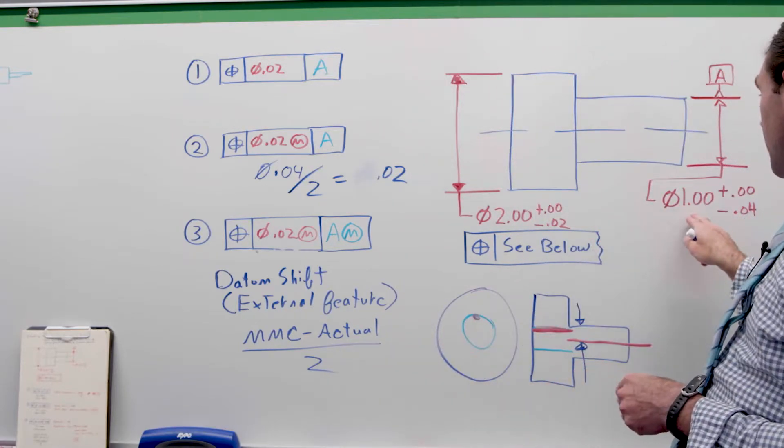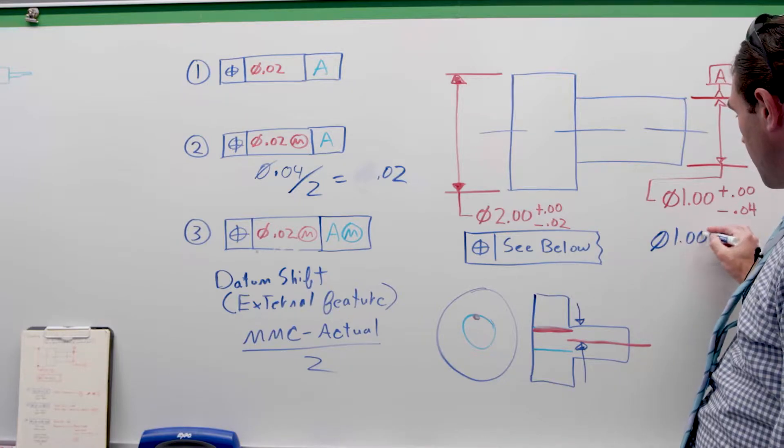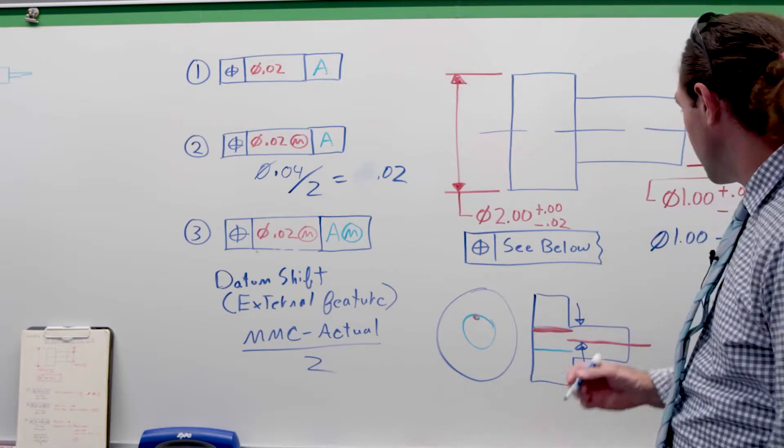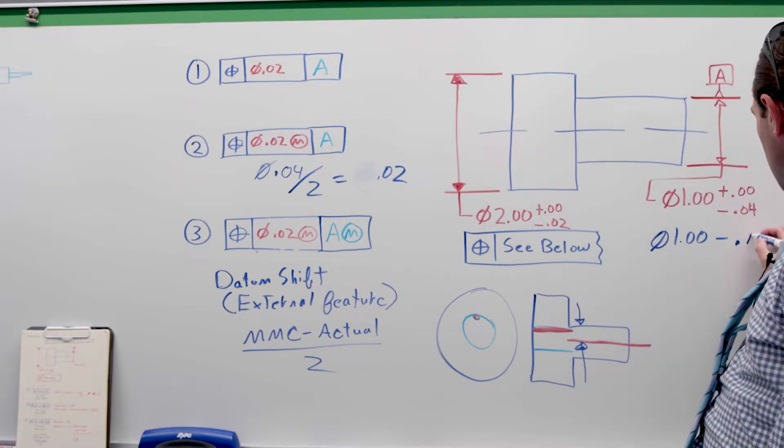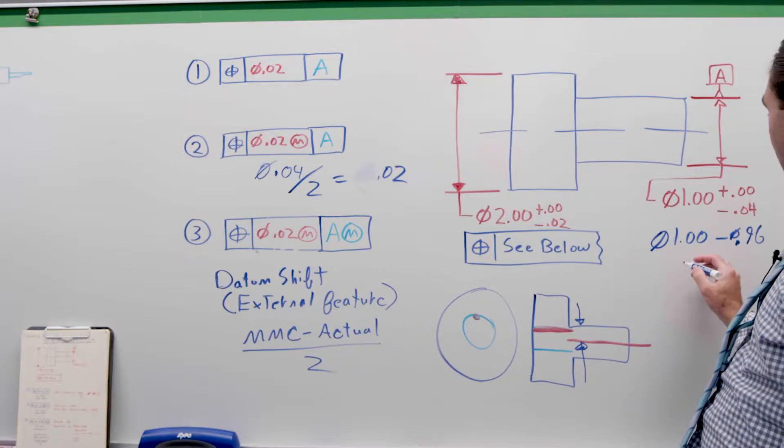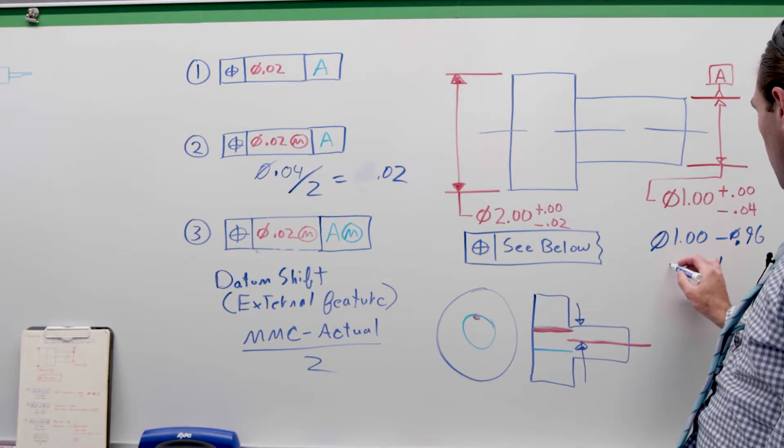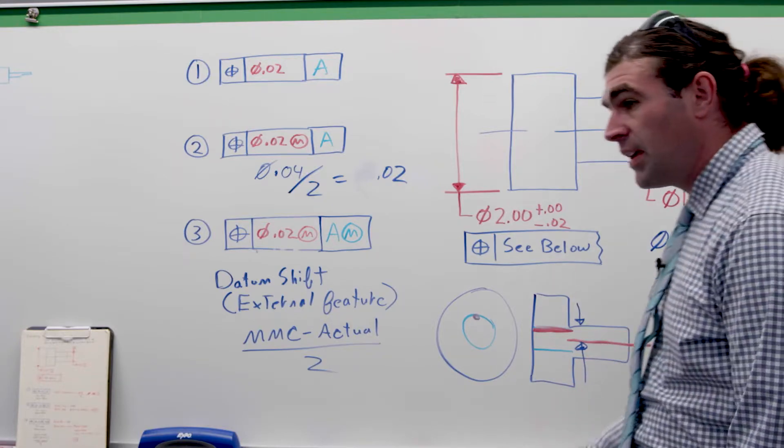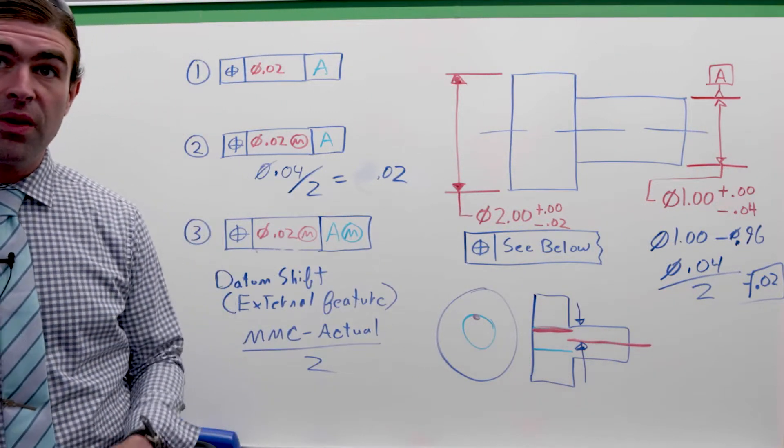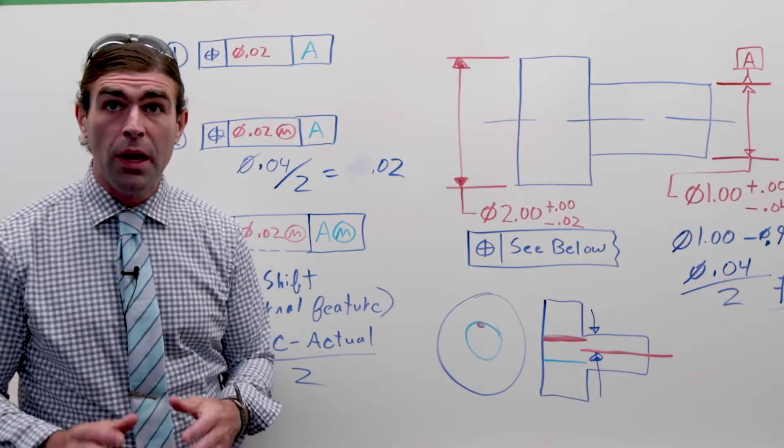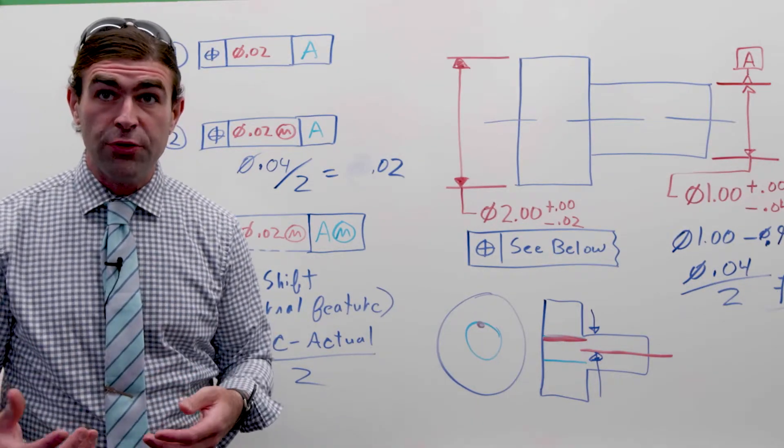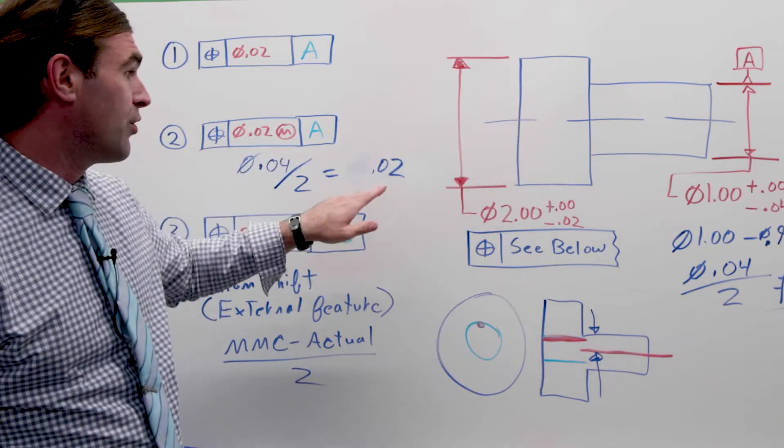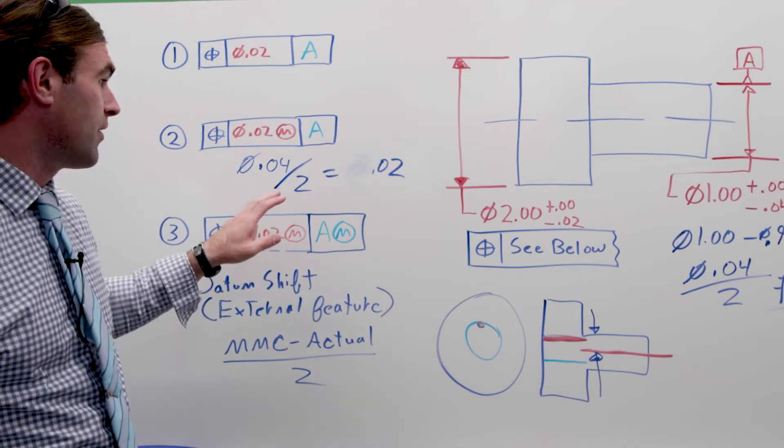And the equation for this, the equation for the datum shift of an external feature is the MMC minus what it actually comes in at. So we're looking at worst case, we're going to say the smallest size it could come in at, over 2. That's how far the axis could move away. So in this case, our MMC is 1 inch. The smallest it can be, the actual size or worst case in this scenario is 0.96. That gives us 0.04 over 2 equals 20 thousandths. That's our datum shift. We already know what the feature being controlled, how far the axis of it can be away, 20 thousandths. We already divided that by 2. That's the radial.